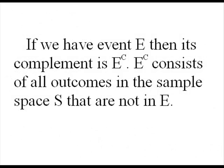So we have an event E. Its complement is E to the C. And E to the C consists of all outcomes in the sample space S that are not in E. So E to the C is really, in essence, not E. Everything that E is not.